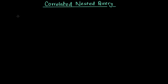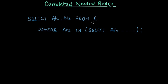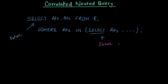Hello everyone, welcome to tech2.com. In this lecture we will be understanding correlated nested queries or subqueries. We already know that a subquery has a query inside a query — for example, SELECT attribute1, attribute2 FROM r1 WHERE attribute3 IN (SELECT attribute3 FROM ...). In this case the inner query executes only once: the inner query runs first, values are found, then the outer query executes and checks the condition.